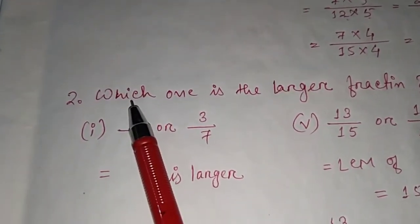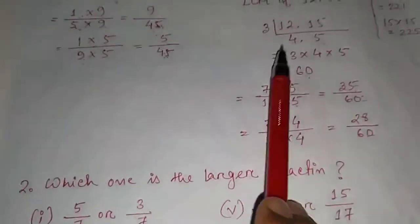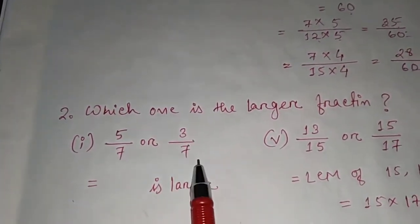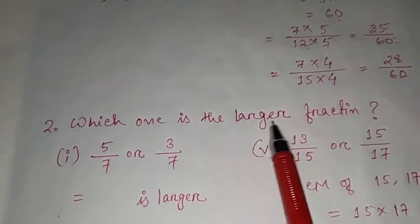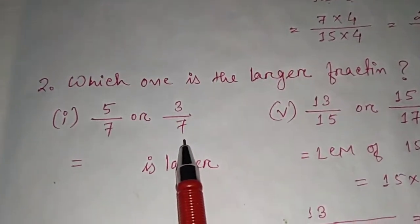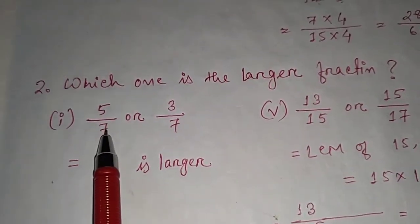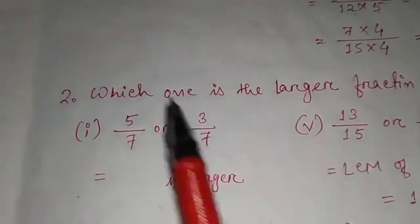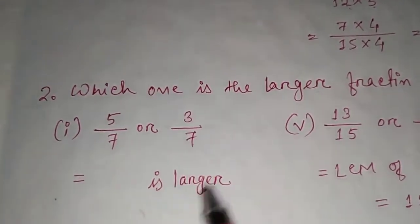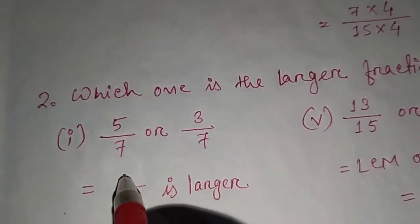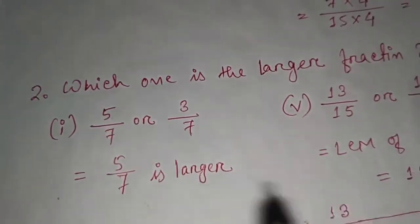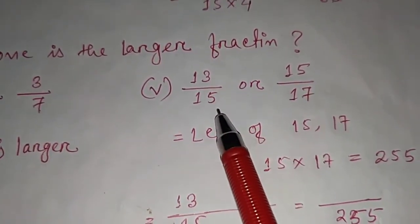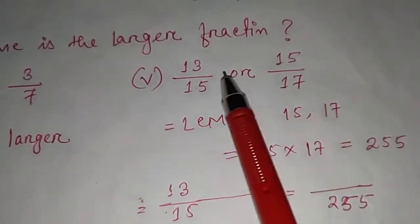Now let's move to question 2: which one is the larger fraction? Sub-question 1: 5/7 or 3/7? The denominators are both 7 — same — so we only compare numerators. 5 is bigger than 3, so 5/7 is the larger fraction.